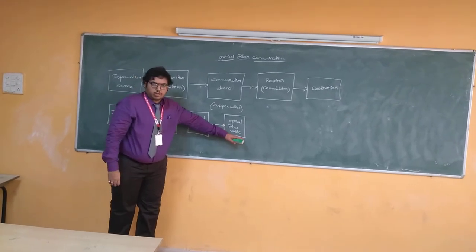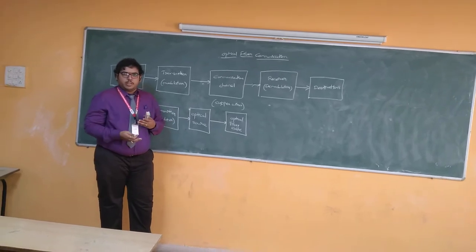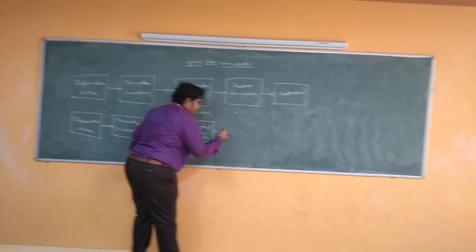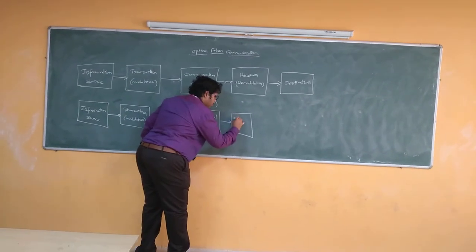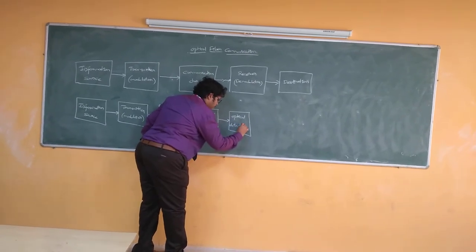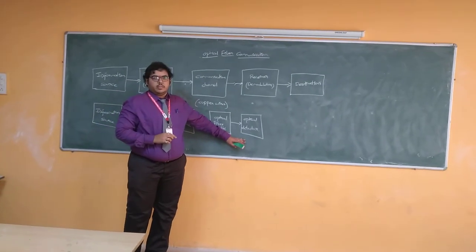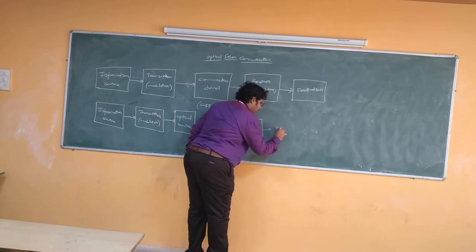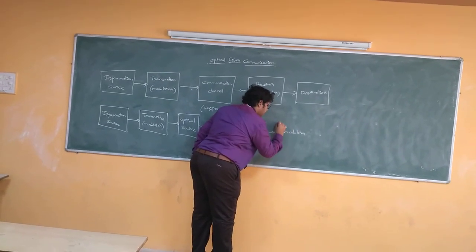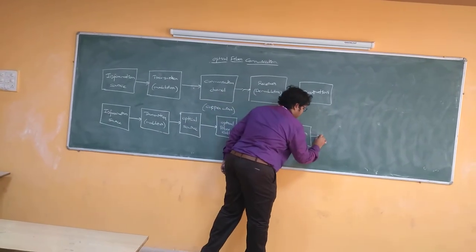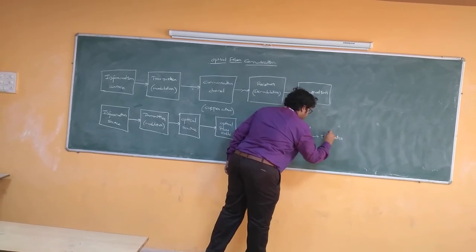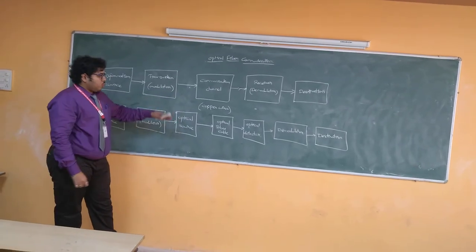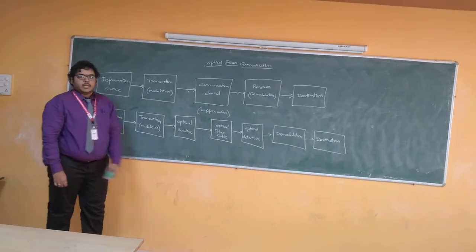At the receiver section, most of the processing of the signal is done using electrical-based devices. So the first part is to convert the optical signal into an electrical signal, and for that we will be using an optical detector. The light is detected by this device and it converts the light signal into the respective electrical signal. At last, it is given to the demodulator section where the message signal is separated from the carrier signal, and then given to the destination.